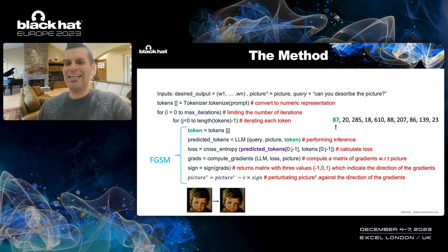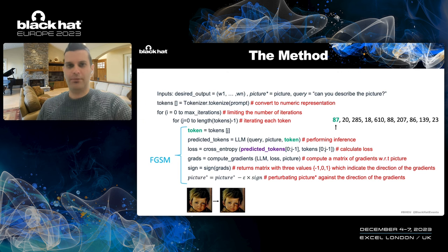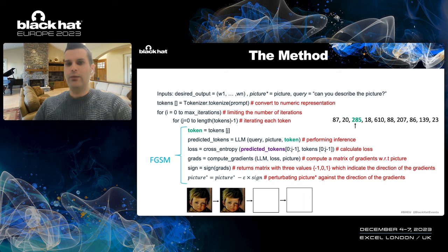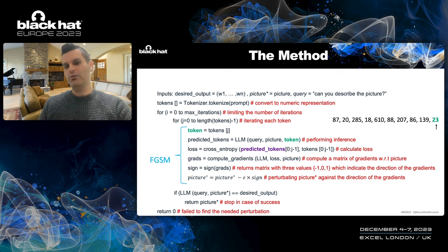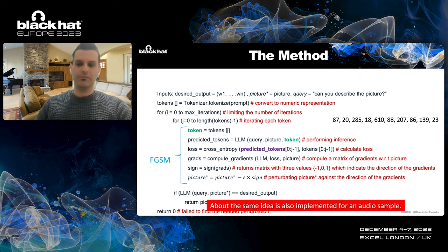We deduct this multiplication from the picture — this is where we perturb the picture against the direction of the gradients, taking only one epsilon step. In each and every iteration we apply this FGSM technique for each token until either the LLM outputs the desired output, or we reach the maximum number of iterations and declare failure. The same idea is also implemented for audio samples — you can find the details in the paper.